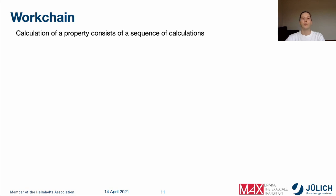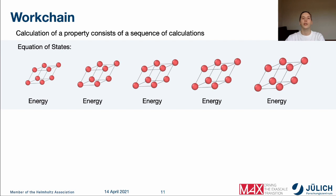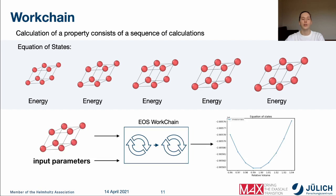Let's consider the example of an equation of state calculation. In this type of calculation, one wants to perform a set of calculations for different structures having different lattice constants in order to find the lattice constant which gives the lowest energy. In AIDA Floor, we have an equation of state work chain which accepts as input only a single structure and some input parameters in order to automatically calculate this dependency and determine the equilibrium lattice constant. We can treat this work chain as a black box that performs all necessary calculations.